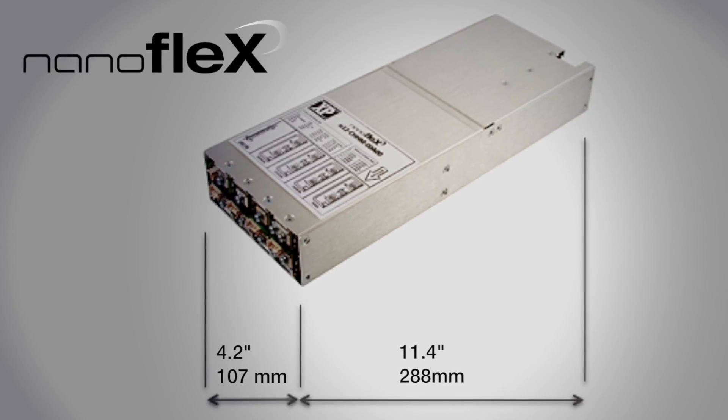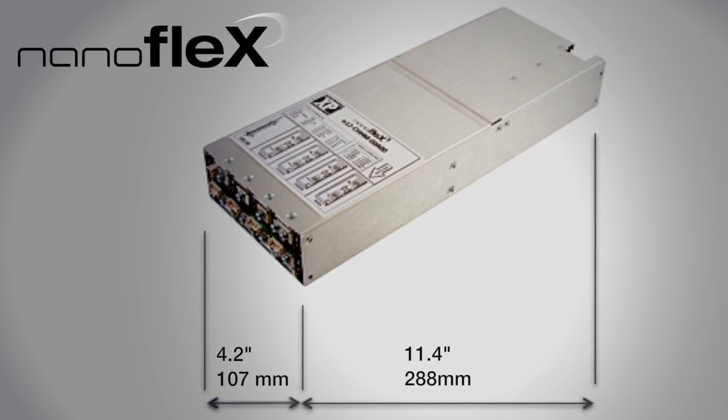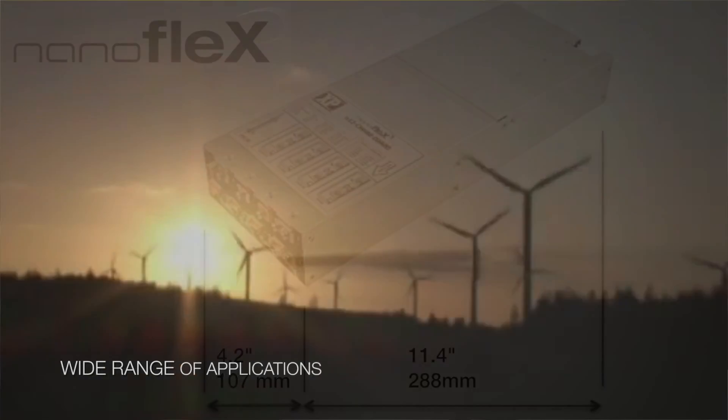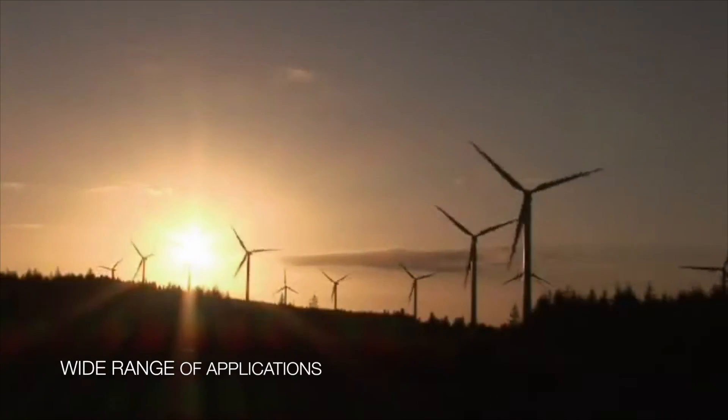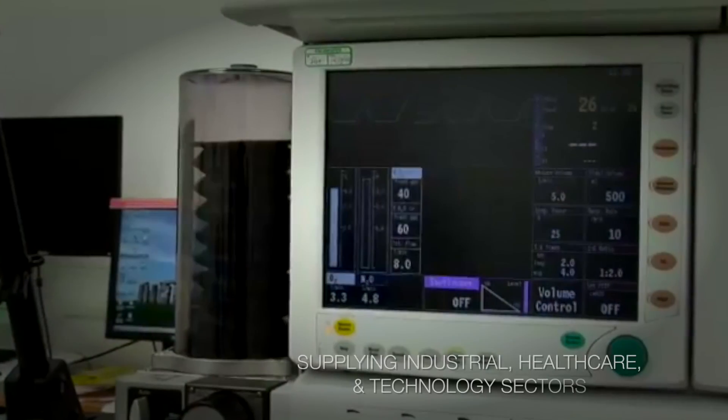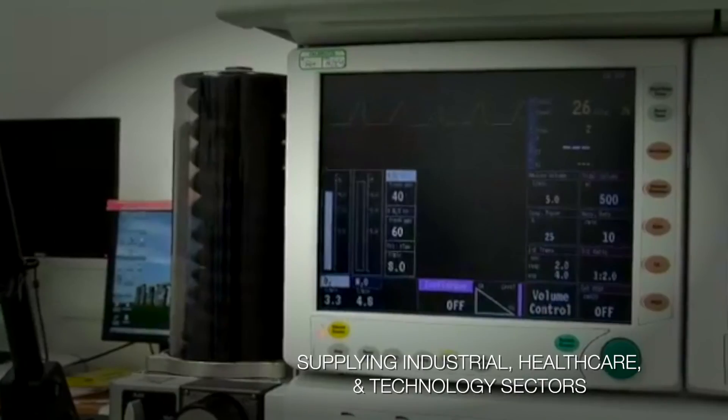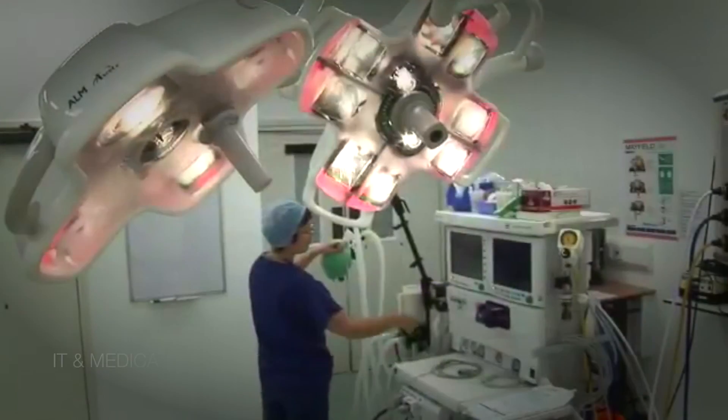NanoFlex is a compact AC-DC power supply. It measures only 4.2 by 11.4 by 1.65 inches, and that low profile means it can go into one-U 19-inch applications. It's an efficient, flexible, programmable, configurable power supply, which means we can tailor the product to suit the exact requirements of customer applications.